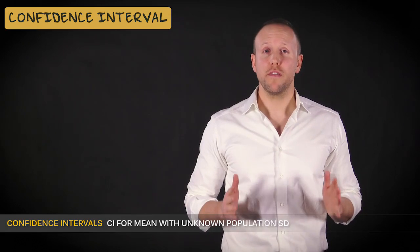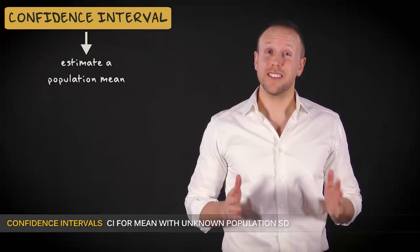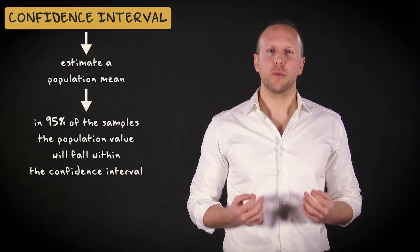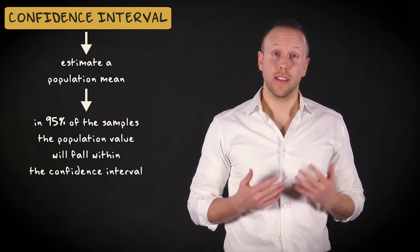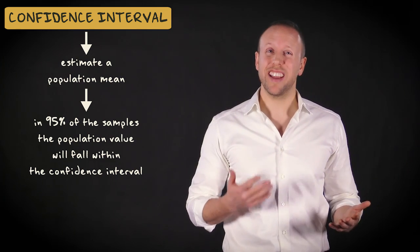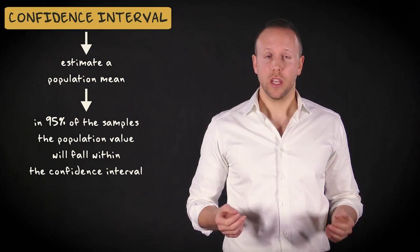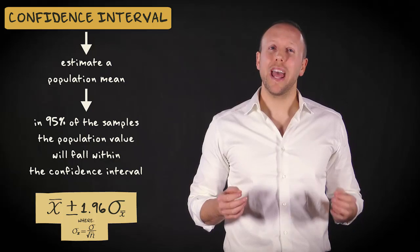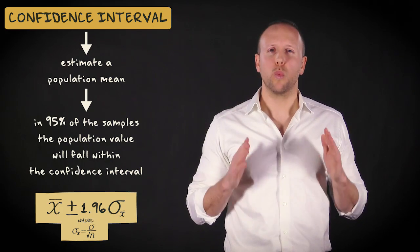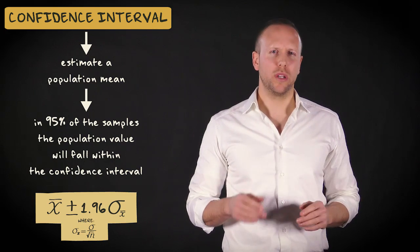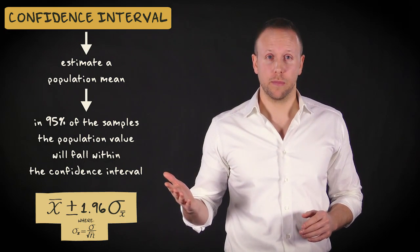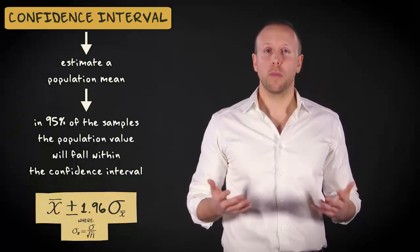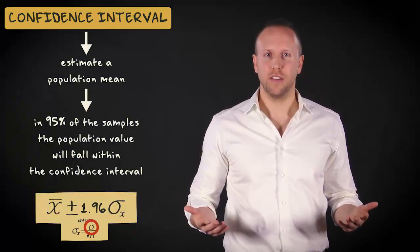A 95% confidence interval to estimate a population mean tells us that we have 95% confidence that this interval contains the actual population mean. With this formula, you can compute the endpoints of the interval. There is one big problem with this formula, however: to compute the confidence interval, you need to know the population standard deviation.